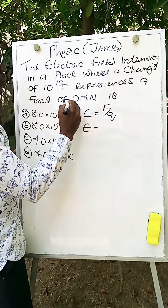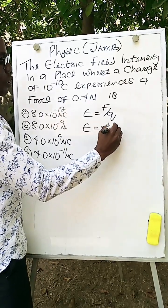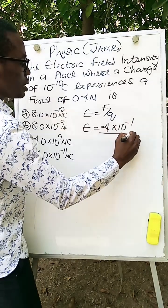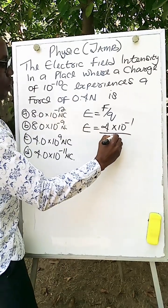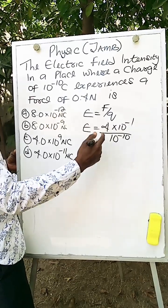E would be equal to the force, now 0.4 Newton, which is 4 times 10 to the power of minus 1. And the charge now is 10 to the power of minus 10. Using standard form,